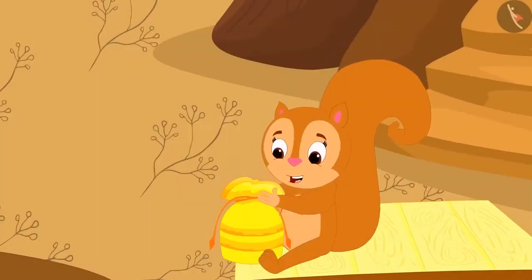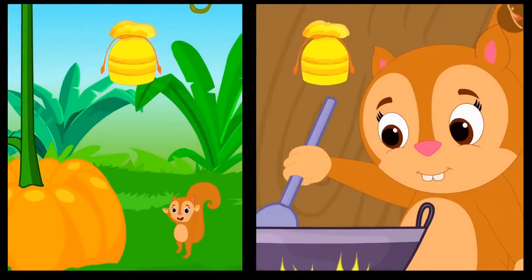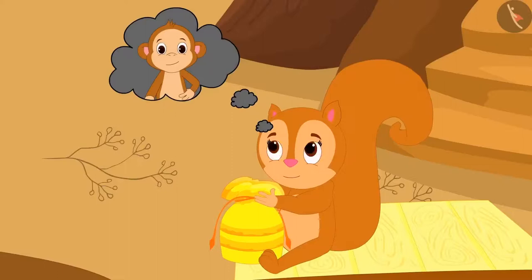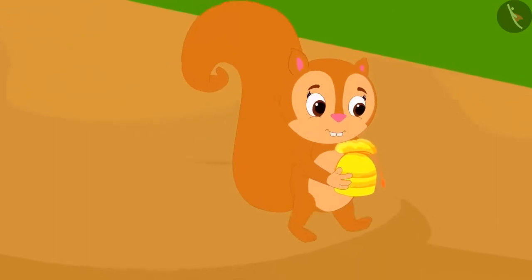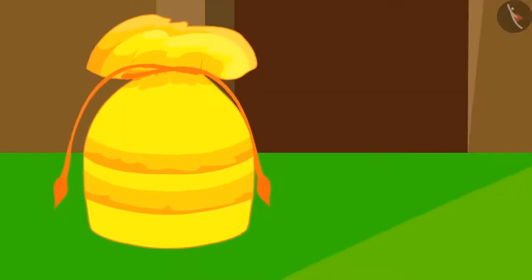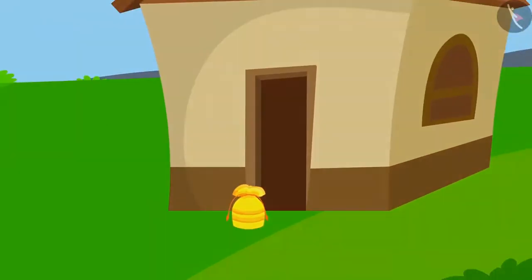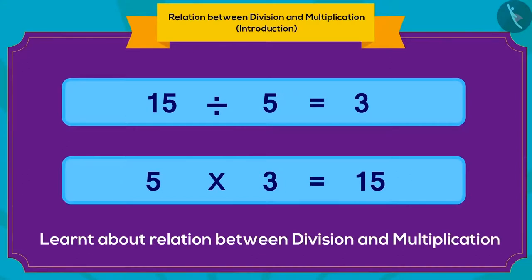Just when Chanda was about to open the third pouch, she thought to give it to her friend Babban to make him happy. She quietly left the pouch outside Babban's door. Children, in this video we learnt about the relation between division and multiplication. In the next video, we will bring some interesting examples related to this.